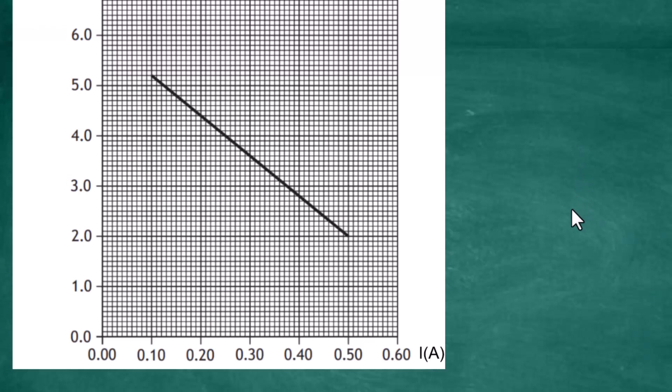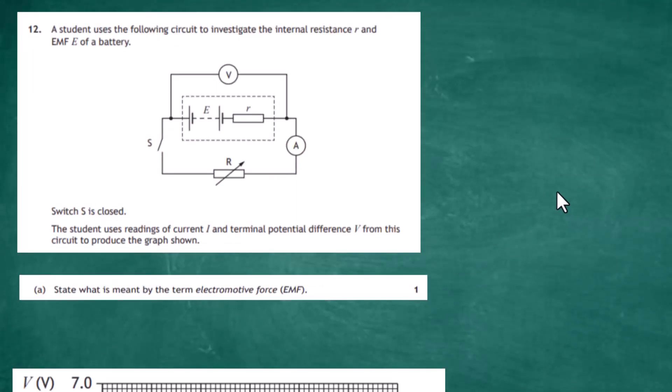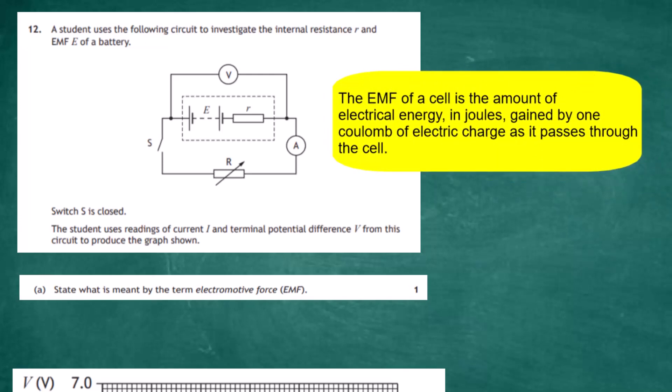For the first question it says: state what is meant by the term electromagnetic force, EMF. It's one mark, so it's a set-piece statement. The EMF of a cell is the amount of electrical energy in joules gained by one coulomb of electric charge as it passes through the cell. You just have to remember that — that's exactly what the EMF stands for.